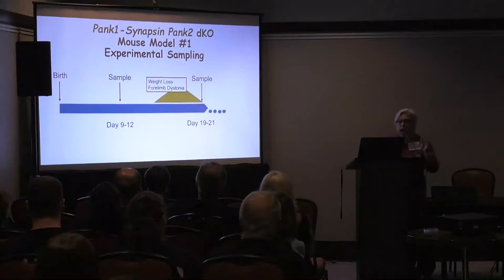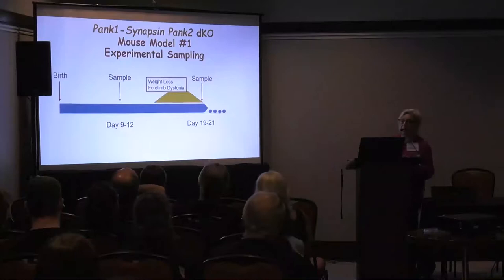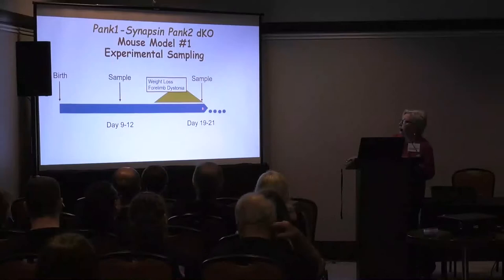Before day 15, they don't show this phenotype — not at day nine through twelve. But they develop it in the intervening period, along with the weight loss and forelimb dystonia. To look at what's happening on a molecular level, we sampled the brains of the mice both before and after the development of the phenotype.